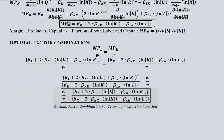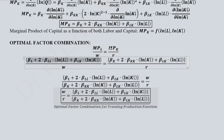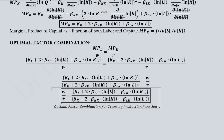Then we have the optimal factor combination — the condition that we have been studying for every production function. We now have the value of MPL substituted here, and the value of MPK substituted here. We can rewrite it in the form where W over R is expressed, giving us W over R equal to a certain value. This would be the optimal factor combination condition for a translog production function.